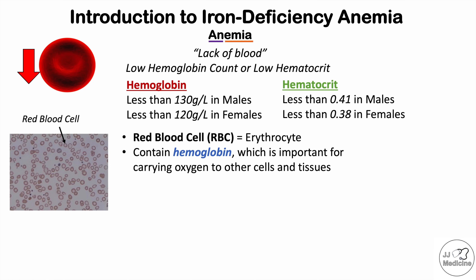What's important with regards to red blood cells is that they contain hemoglobin, which is important for carrying oxygen to other cells and tissues. They are essentially bags of hemoglobin that carry oxygen around to cells and tissues. They can also carry carbon dioxide from tissues back to the lungs. They are essential for carrying oxygen to cells and tissues.